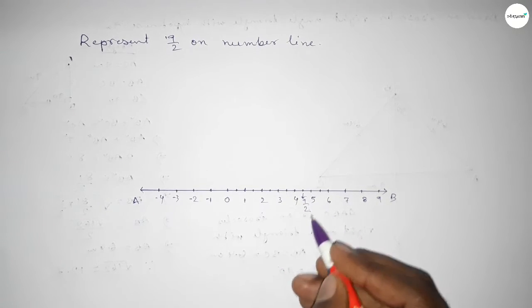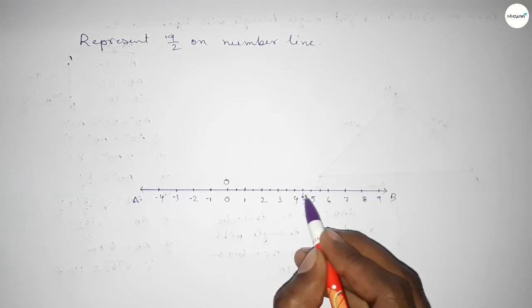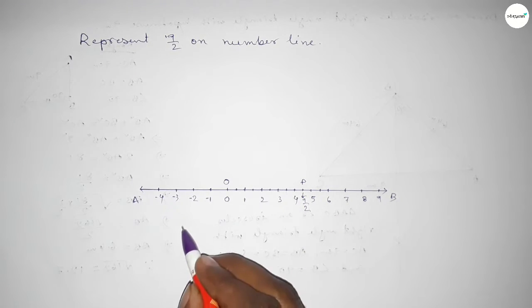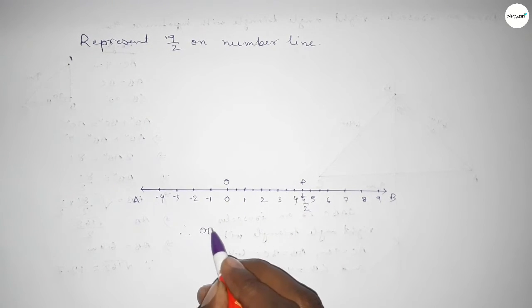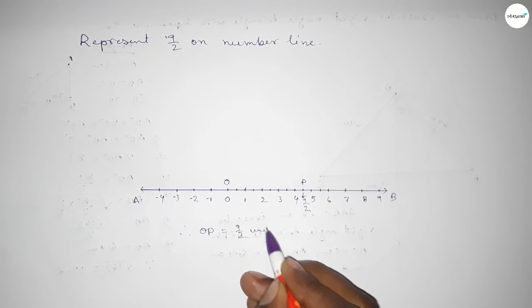So taking here O point and P point, so therefore OP equal to 9 by 2 unit.